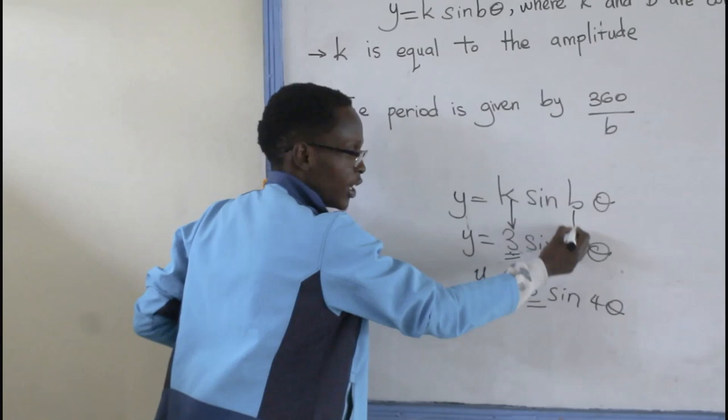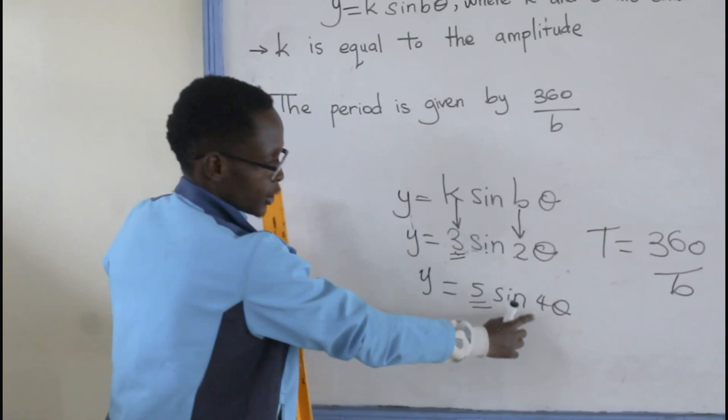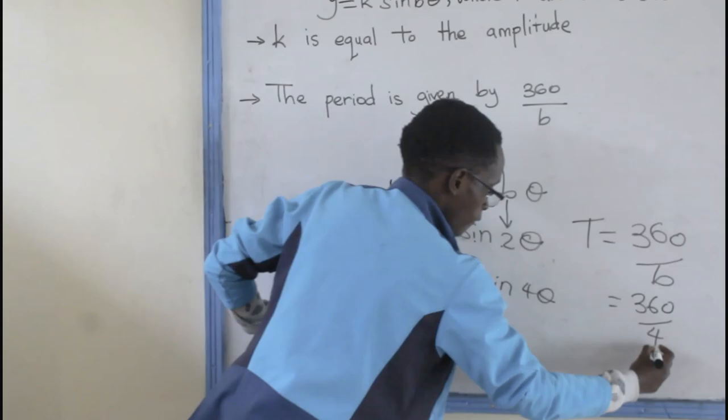So, if you want to find the period T, you take 360 degrees divided by B. So, for our case here, it might be 360 degrees divided by 4.